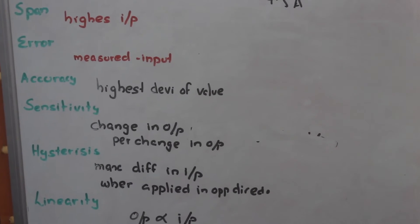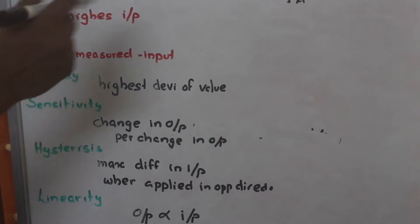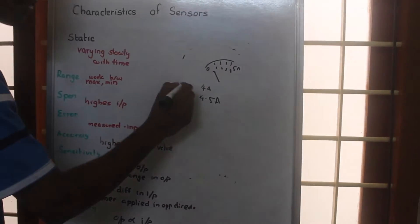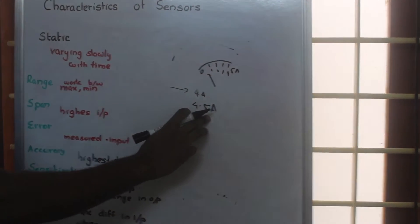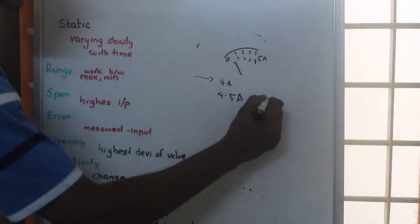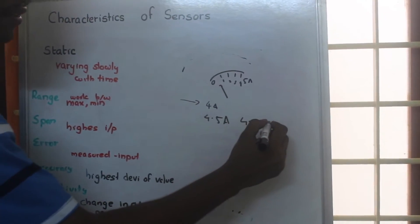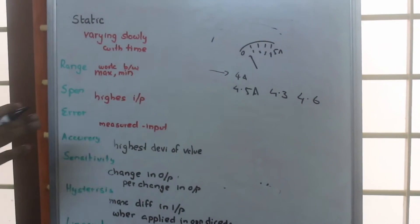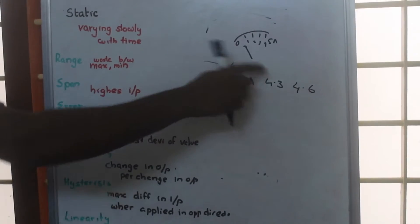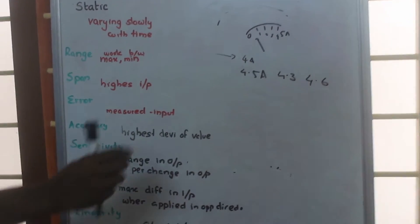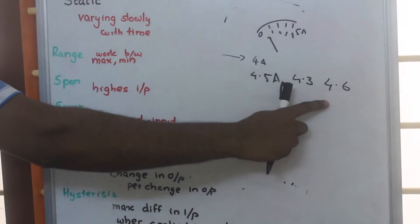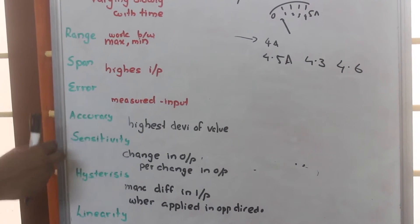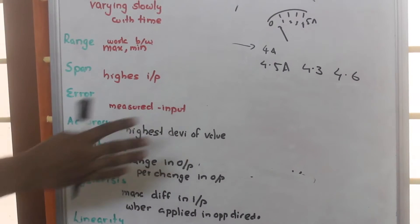Then accuracy. Accuracy means suppose at a time we have measured the current. The actual current was 4 ampere but we got 4.5 ampere. After some time we will be getting 4.3 ampere, and after some time we will be getting 4.6 ampere. In all three cases there is error, but the maximum error is 0.6, and that is what is called as accuracy — the highest deviation of value.